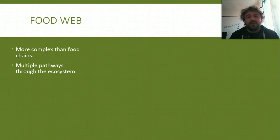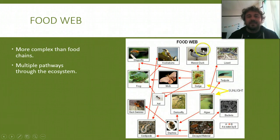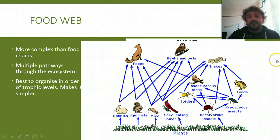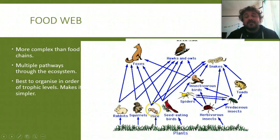Food web — same sort of deal, but a bit more complex. You have multiple pathways through the ecosystem, which can be a bit confusing. Here's our sunlight, and we've got these two producers, and all the different things that eat them. The best way to organise it is by trophic levels — producer at the bottom, decomposer at the top, just makes it simpler. So you've got your plants, then your herbivores, then your primary consumers, then your secondary consumers, then your tertiary consumers. The hawk, or the owl, will eat the mouse so it can technically be at that level, however it will also eat the bird, so the owl goes higher.